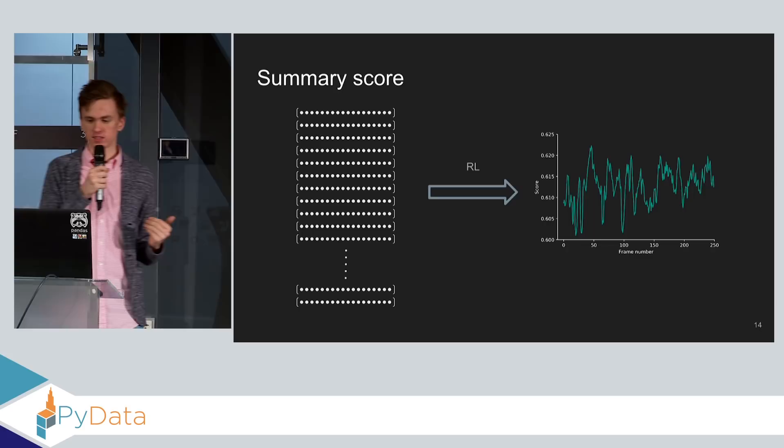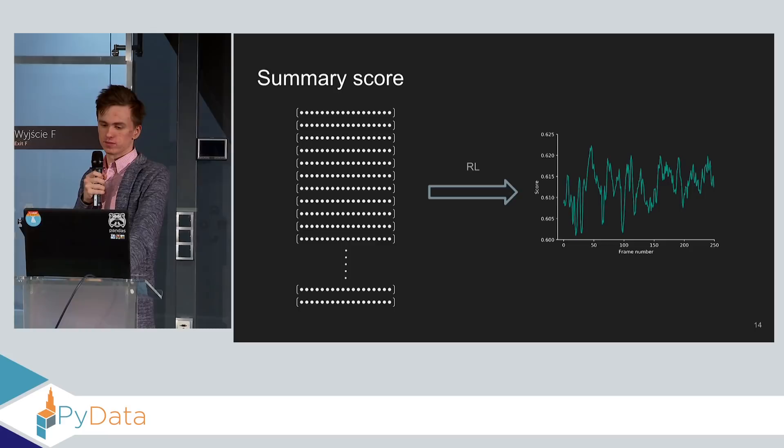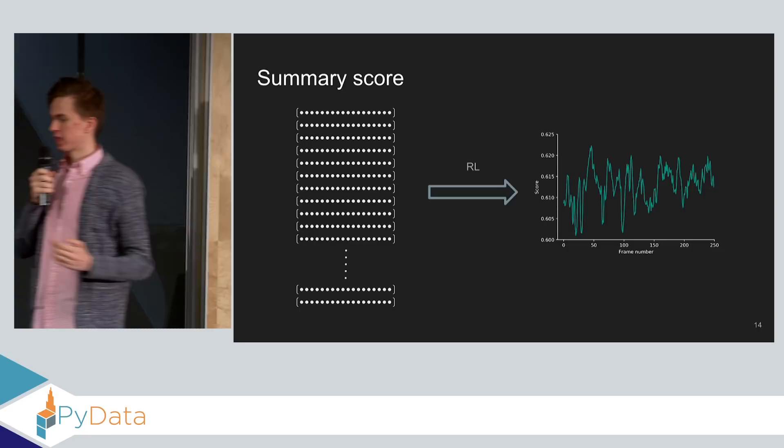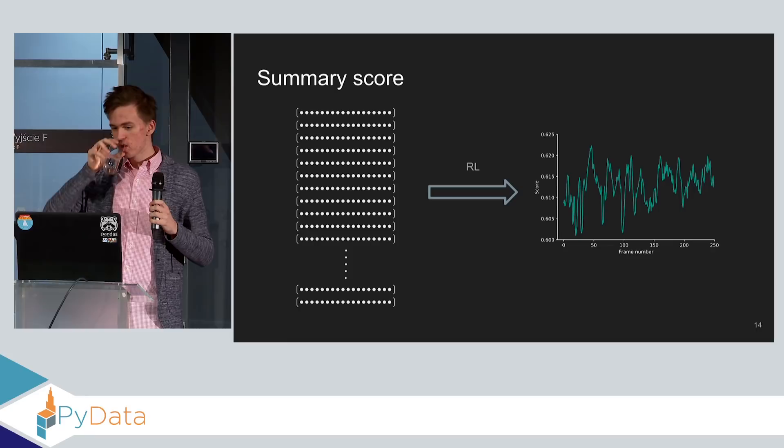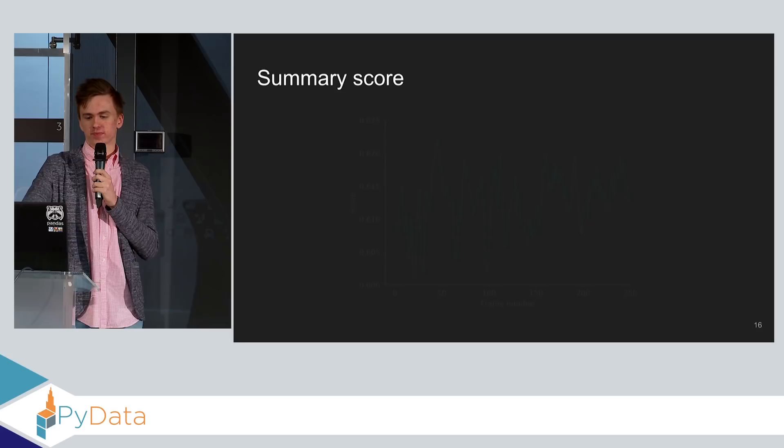So we get our summary score. It's a score from 0 to 1. You can see on this graph, the x-axis is a frame number and y-axis is the score. We can't really use the score by itself. We can just select the frames with the highest score. It will produce not very good results.